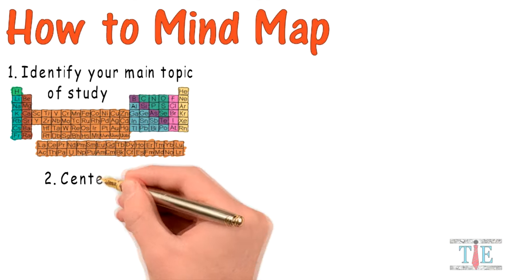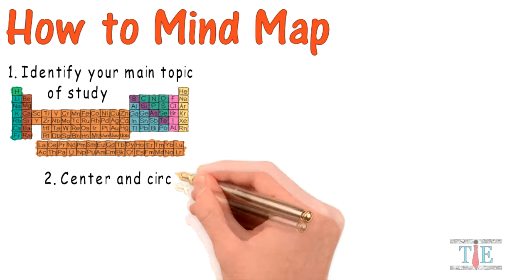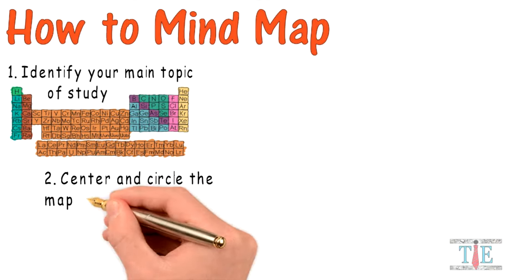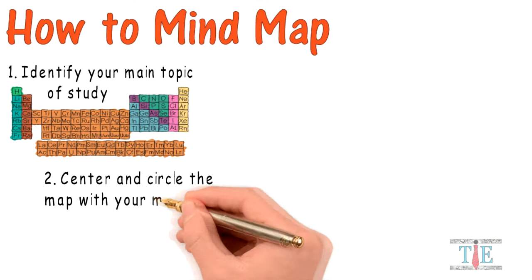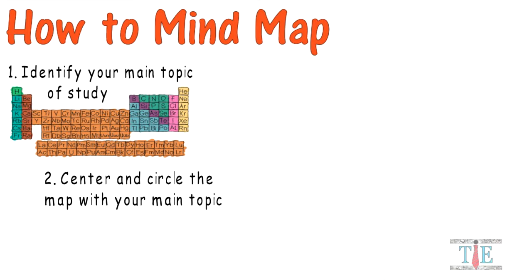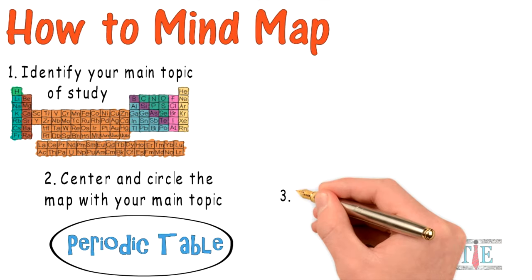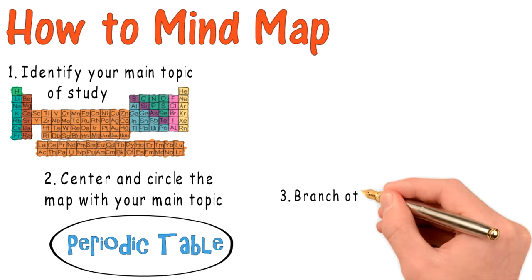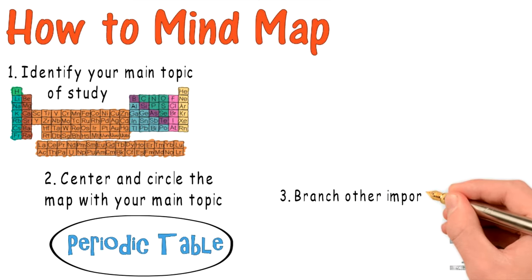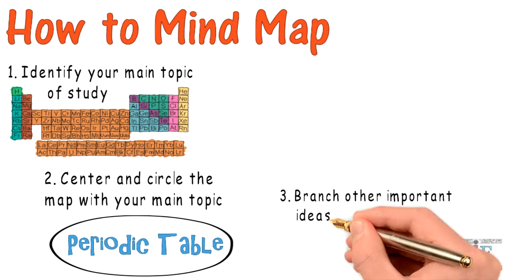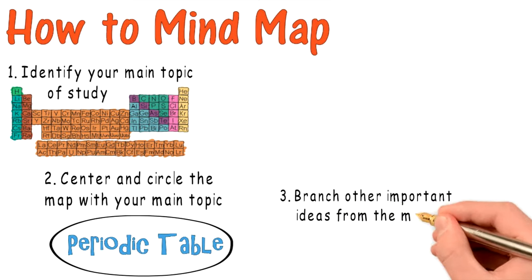The next thing you do is center and circle the map with your main topic of study. Write the words 'periodic table' and place a circle around it. Then, branch off other important ideas from the main idea.